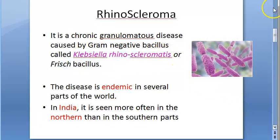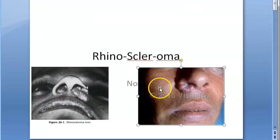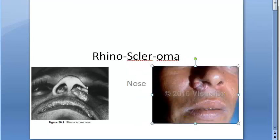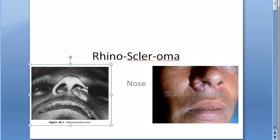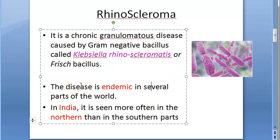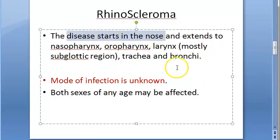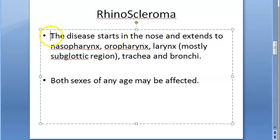This is a chronic condition — just like tuberculosis and leprosy, it runs for a long time and doesn't come up suddenly. Rhinoscleroma is endemic in several parts of the world, meaning it is always prevalent there. In India, it is found mostly in the north. The disease starts with the nose.